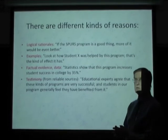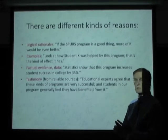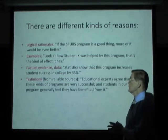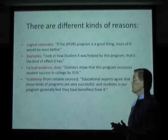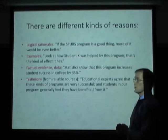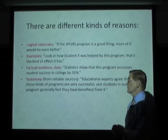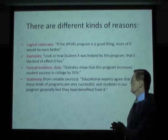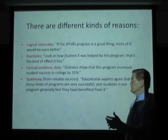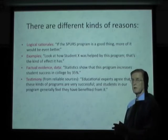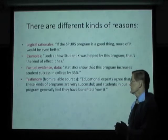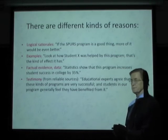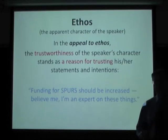There are different kinds of reasons that can be given in a logos appeal. One kind is logical rationales — for example, if the Spurs program is a good thing, then more of it would be better. Another kind is examples — look at how student John was helped by this program. A third kind is factual evidence or data — for example, statistics show that this program increases student success in college by 35%. A fourth kind is testimony from reliable sources — educational experts agree that these programs are very successful, and students generally feel it has helped them.